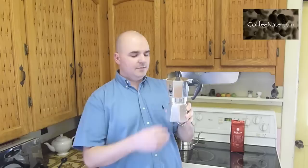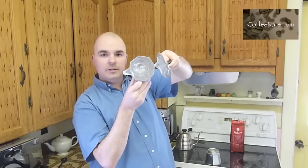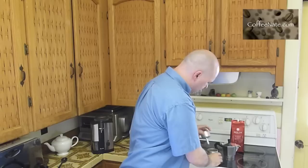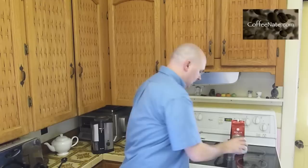The mocha pot consists of three parts. There's the top chamber, which has a screen bottom filter and a spout. The bottom portion, kind of like the same idea as the siphon pot that I've showed you before, is filled with water, and there's a fill line just below the steam valve. So you fill that with water just below the steam valve.